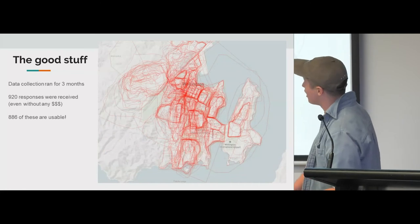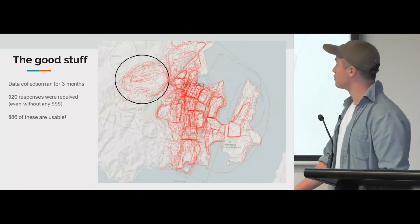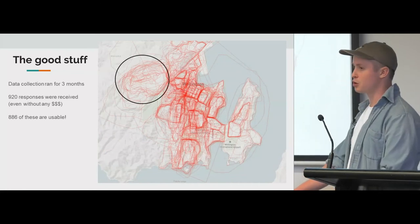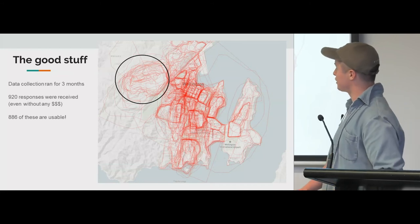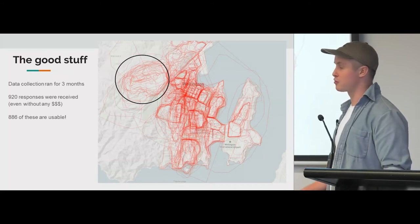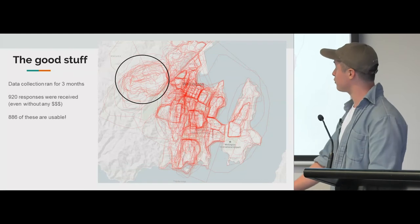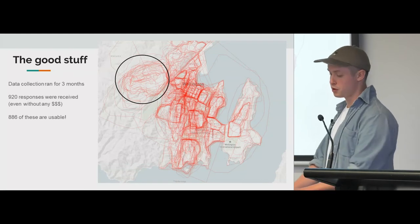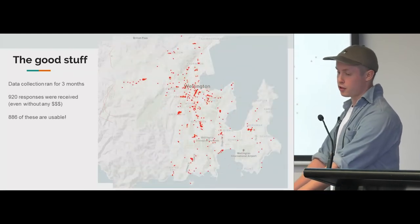The final one I want to point out is Karori — quite a large suburb at the back of Wellington. You can see there's not much consensus around some strong borders compared to a lot of the other ones, which I thought was quite interesting.